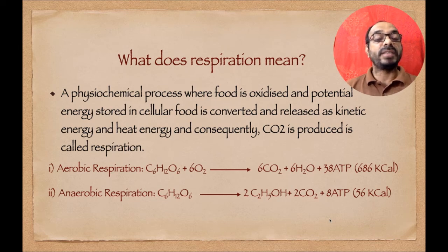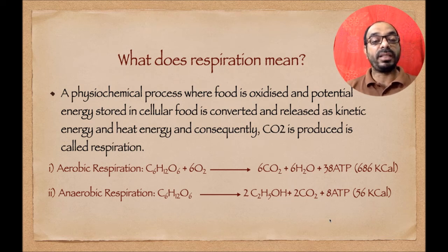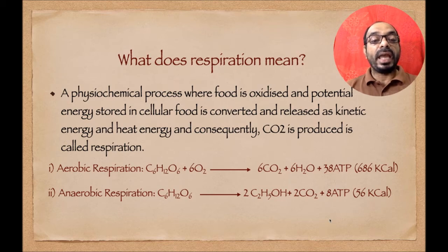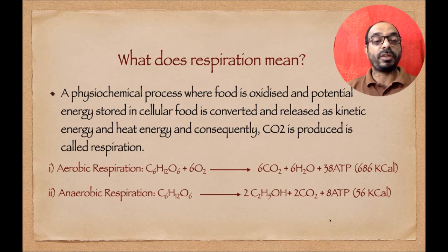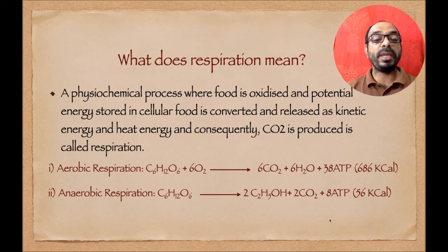Aerobic respiration generally occurs in the cytoplasm and mitochondria — the first steps occur in the cytoplasm and the next steps occur in the mitochondria of a cell. But anaerobic respiration occurs only in the cytoplasm of a cell, in lower organisms.